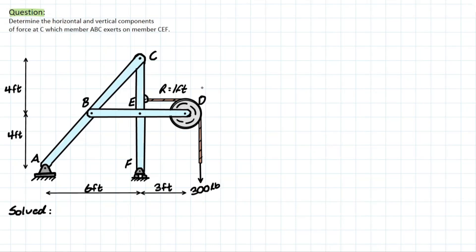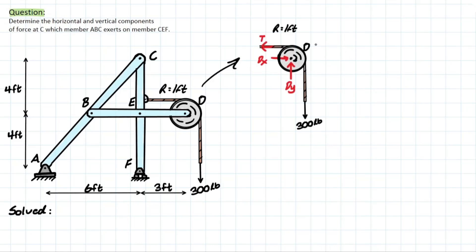With the pulley system isolated, we can see there's a tension created in the rope, because the rope is connected to a member elsewhere and is being pulled toward it. We also have tension created on the bottom by the 300-pound external force pulling down. Since a constant tension acts throughout the entire rope and only one force is applied, T must equal 300 pounds.